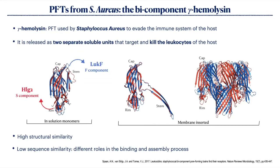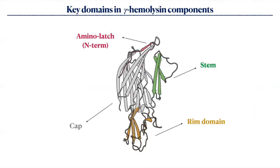The two components have high structural similarity but low sequence similarity, which accounts for the different roles they have in binding and assembly. Here are shown some key domains: the cap is the more rigid one; the rim domain is involved in interaction with the membrane; the stem in green undergoes a conformational change and constitutes the transmembrane channel; and the amino latch — its unfolding is important to allow interaction between monomers in the pore.